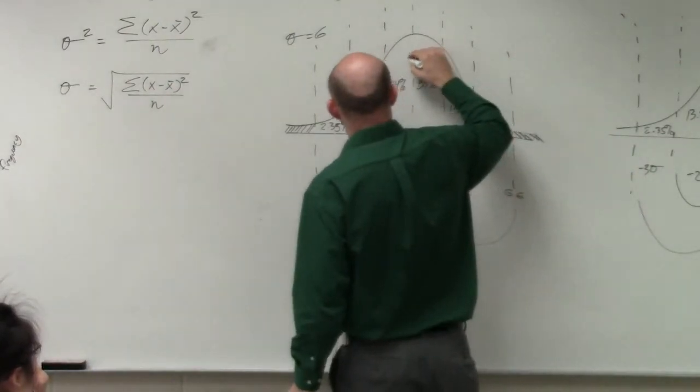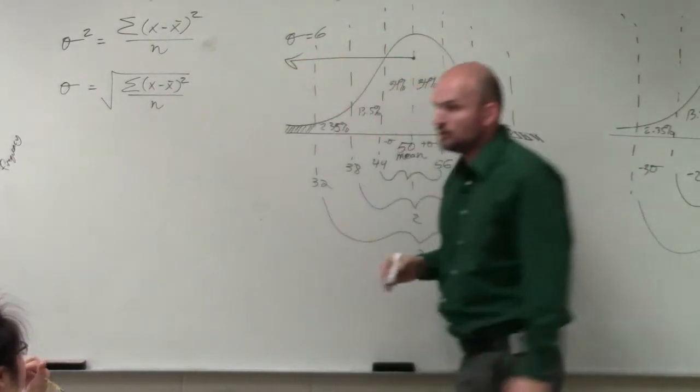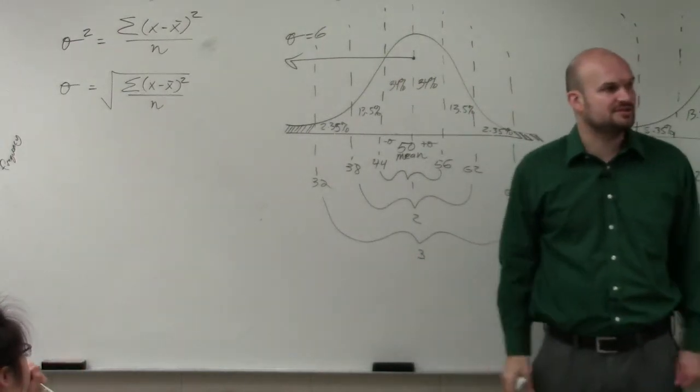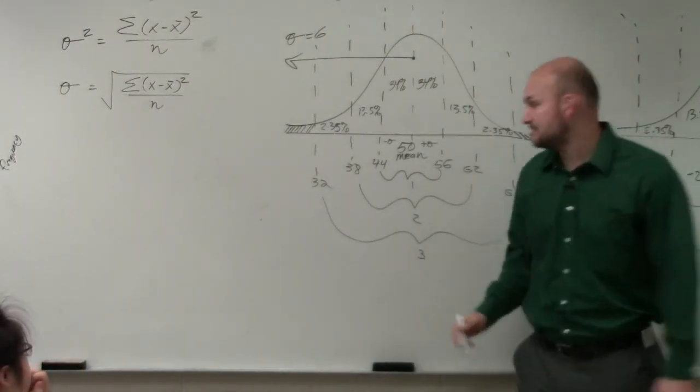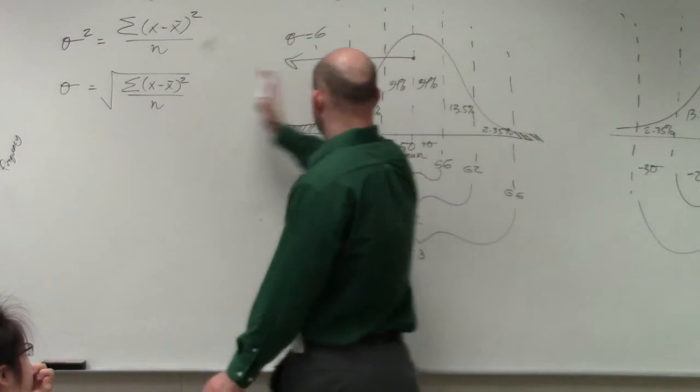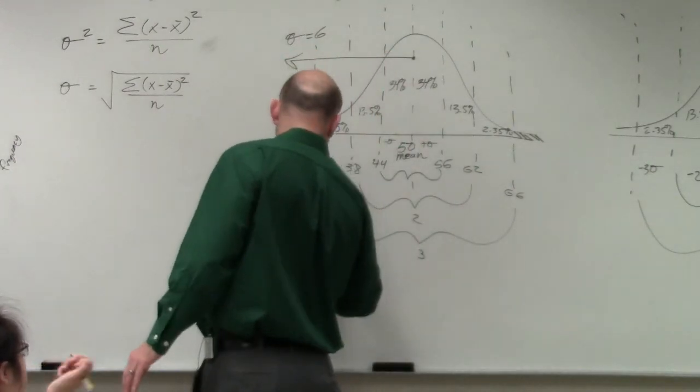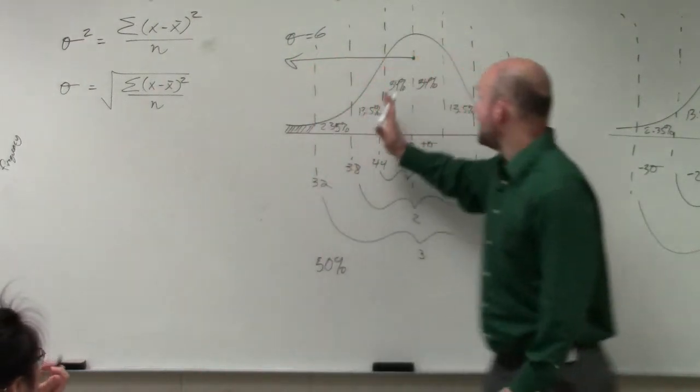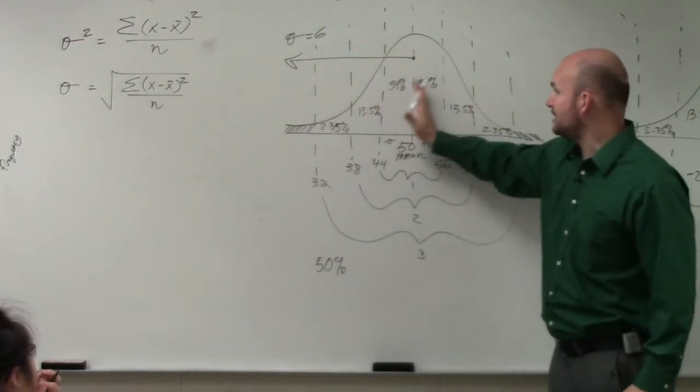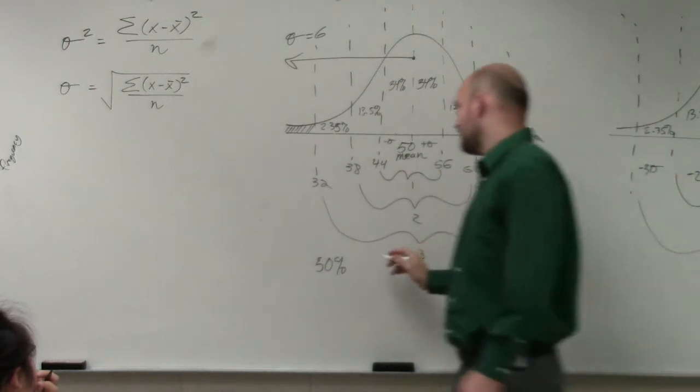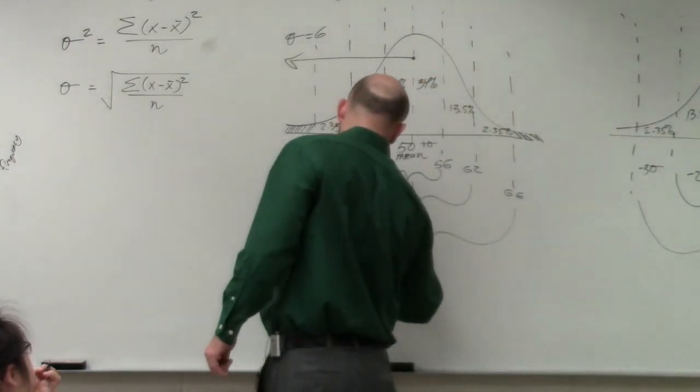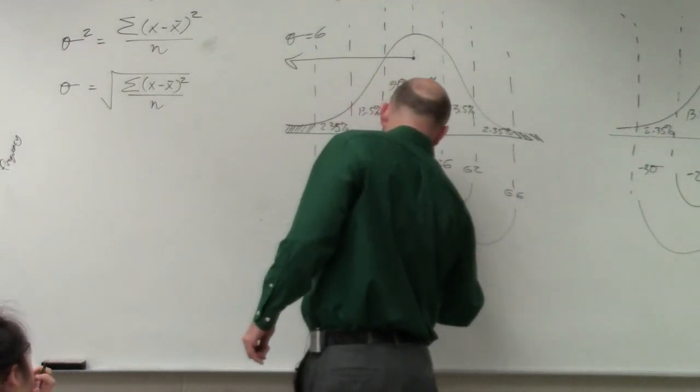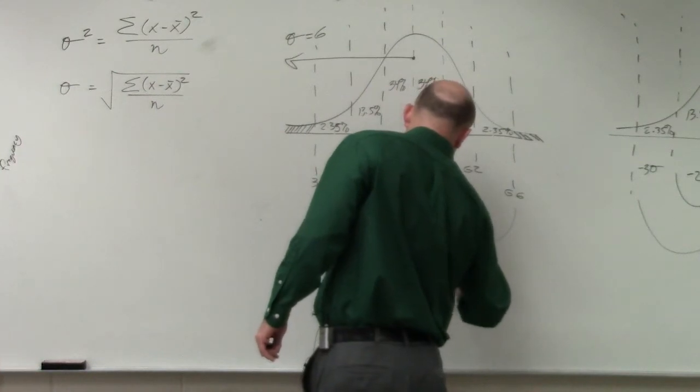then what percentage is it from the mean all the way to the left? Of our data, what percentage is that? 50%. So I know from 50% down, or from 50, the mean there is 50%. Now, how much farther do I need to go from here to at most 56? 34.